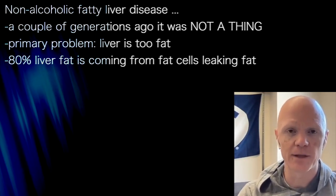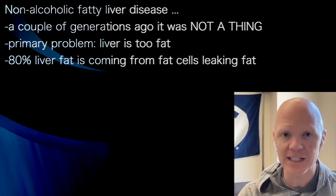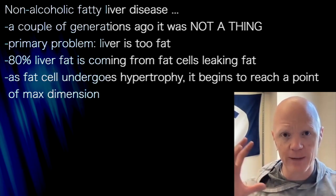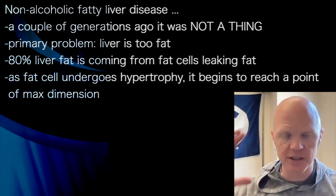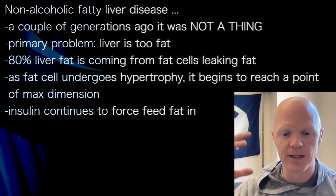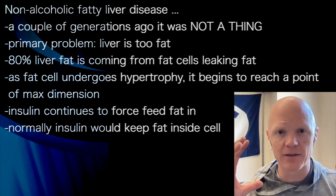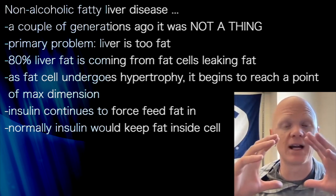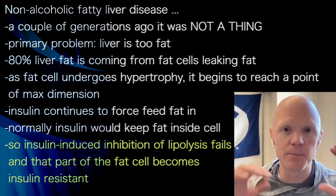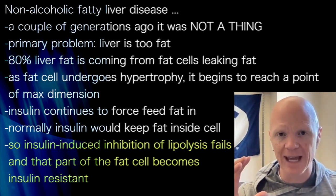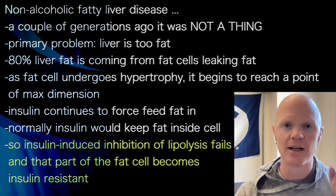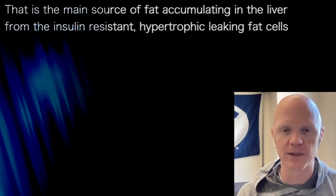Most of the liver fat — about 80% — is leaking into the liver from fat cells, from adipocytes undergoing hypertrophy. As a fat cell reaches a point of maximum dimension, while insulin continues to force-feed fat into the fat cell, normally insulin would prevent the leaking or breakdown of that fat. But the fat cell, knowing it's reaching maximum dimensions and not wanting to explode or undergo apoptosis, starts leaking fat. So insulin-induced inhibition of lipolysis fails, and that part of the fat cell becomes insulin resistant — a hypertrophic, insulin-resistant fat cell leaking free fatty acids is the primary source of fat accumulating in the liver.